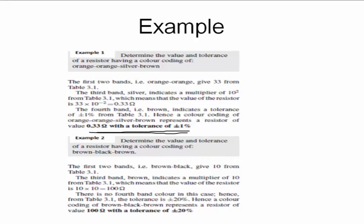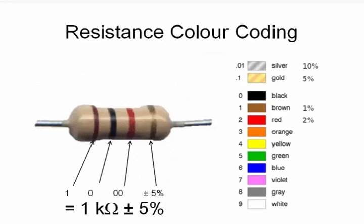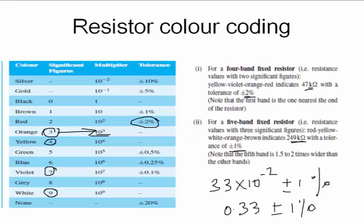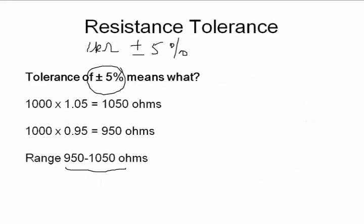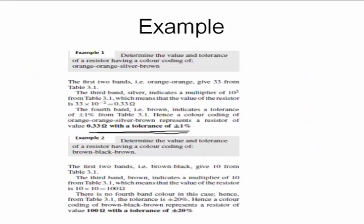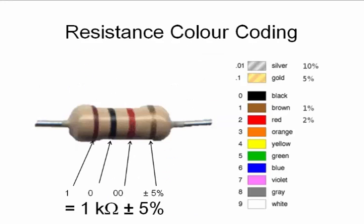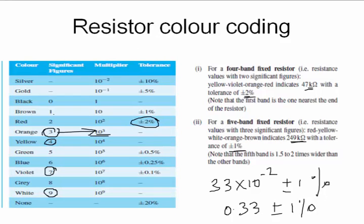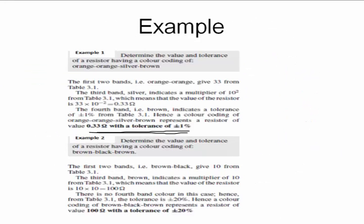The second one is brown, black, brown. Only 3 bands. So brown and black, 1 and 0. And then multiplier of 10. So 10 into 10 is hundred ohms. No tolerance. Tolerance is not defined. But that doesn't mean it doesn't have a tolerance. When there is no fourth color, it means no color. No color means 20 percent tolerance. So everyone follow that. If you don't have a tolerance defined, by default you assume it to be 20 percent. So just remember that. Doesn't mean it is 0, it is 20 percent. So 100 ohms with 20 percent tolerance.